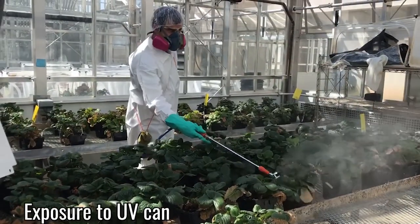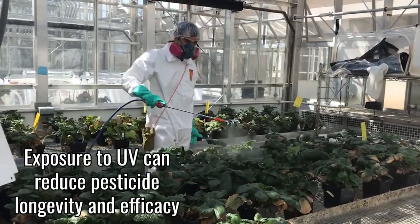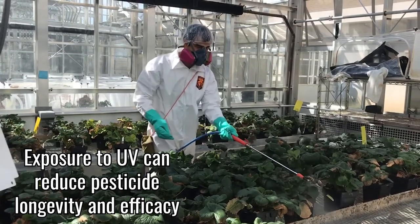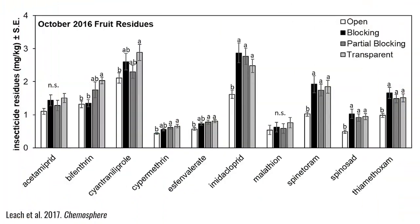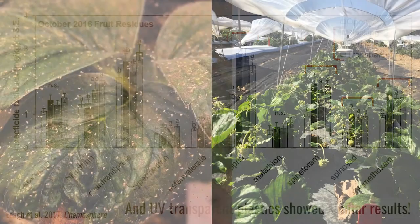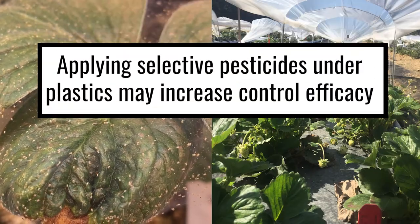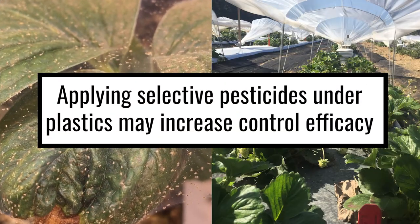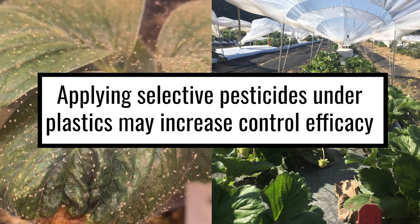UV degradation of pesticides can severely reduce longevity and efficacy. Researchers at Michigan State found that reduced UV transmission increased longevity of several insecticides applied on high-tunnel raspberries. However, this was not consistent for all active ingredients tested in this study. Thus, if pest outbreaks do occur, applying selected pesticides under plastics may increase control efficacy.